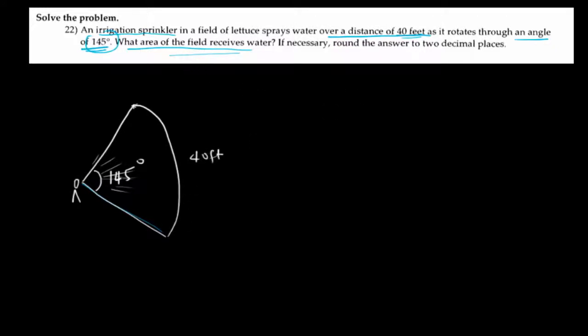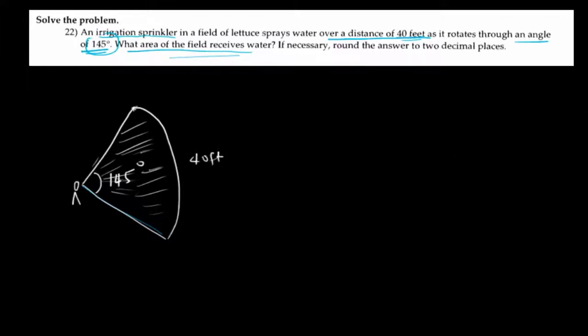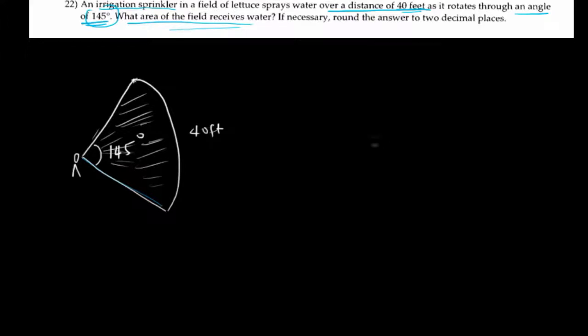We are told that the irrigation sprinkler sprays water over a distance of 40 feet. So the distance from here to here is 40 feet. What the question asks is: what is the area of the field that receives water? This is the area that receives water — you can see that this has the shape of a sector. The area of a sector is given by one half r squared times theta.